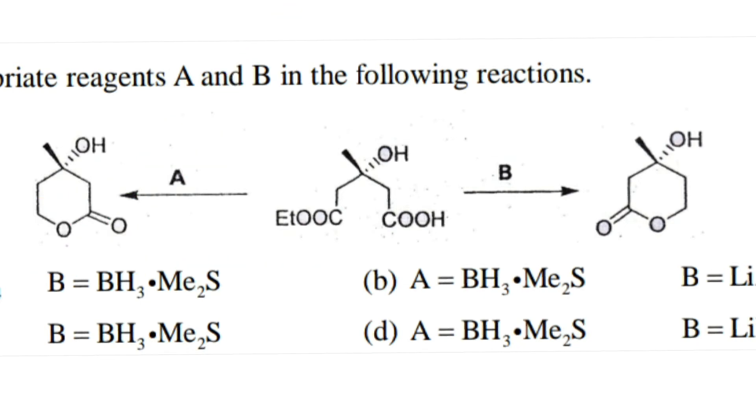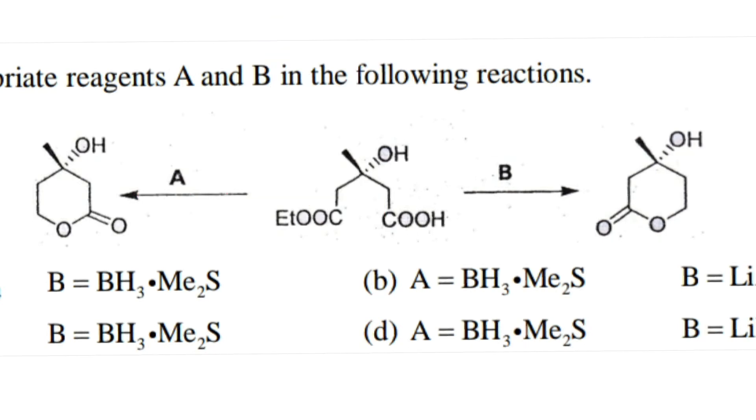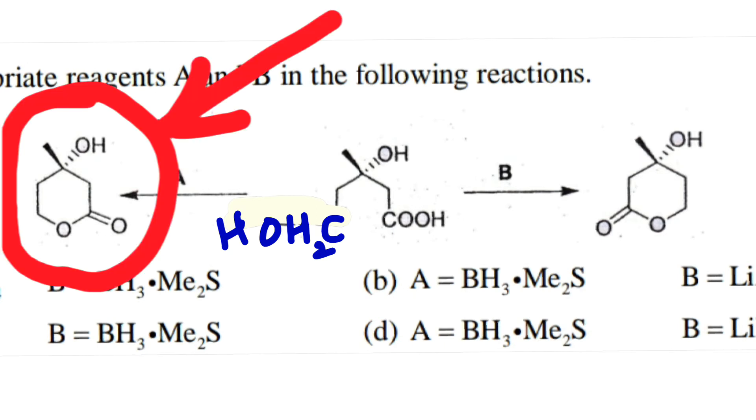That means this part was reduced to alcohol, so we have to get the reagent A which will reduce this group to alcoholic group so that this lactone will be formed.